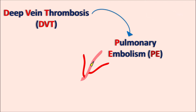Deep vein thrombosis can lead to pulmonary embolism when the thrombus breaks off and blocks a capillary within the pulmonary circulation, reducing blood flow. Pulmonary embolism is an emergency condition that should be immediately treated by dissolution of clots and restoration of blood flow, otherwise it may lead to stroke.